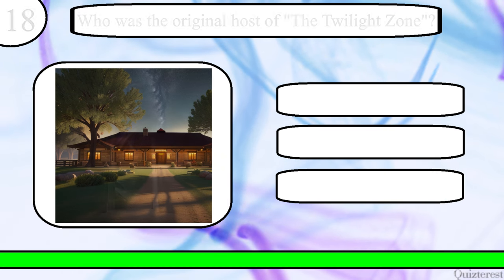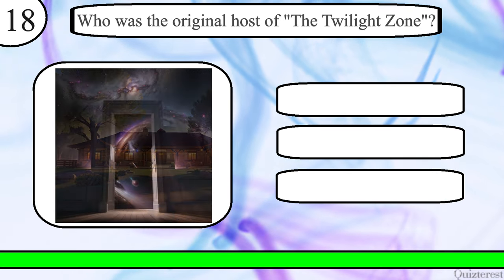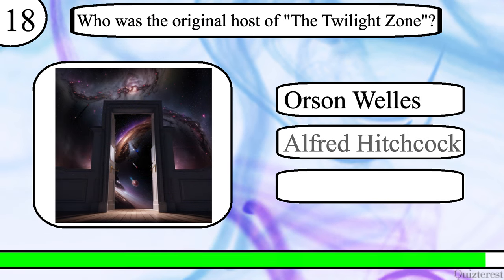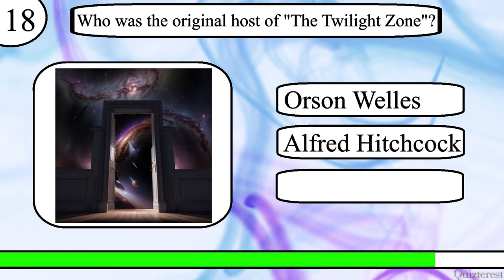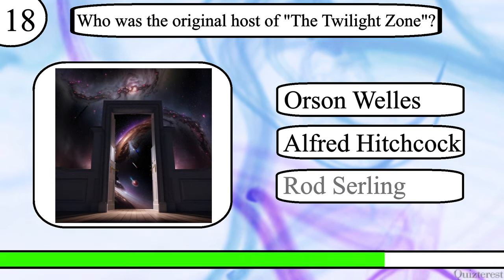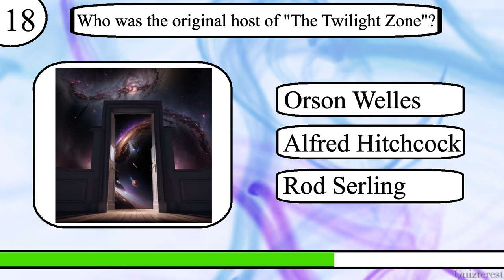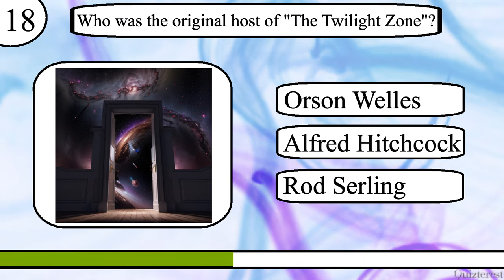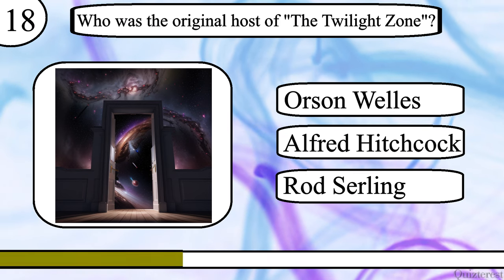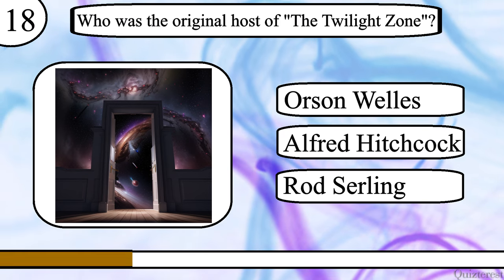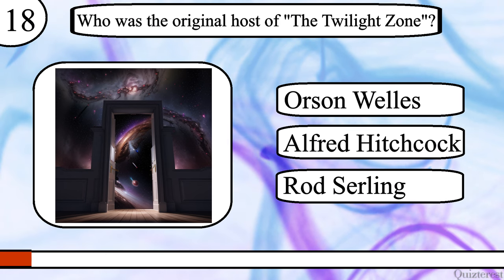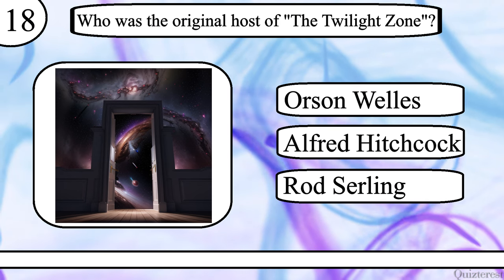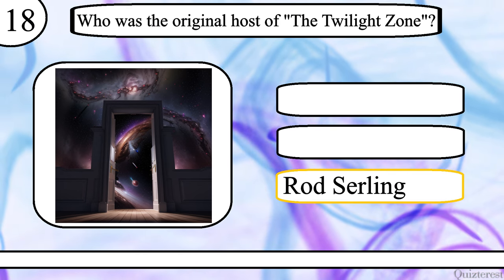Question 18. Who was the original host of The Twilight Zone? Orson Welles, Alfred Hitchcock or Rod Serling? The correct answer is Rod Serling.